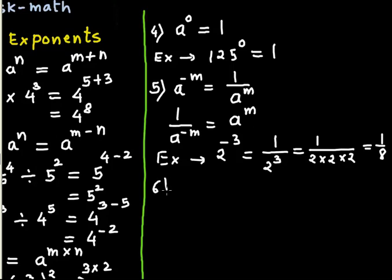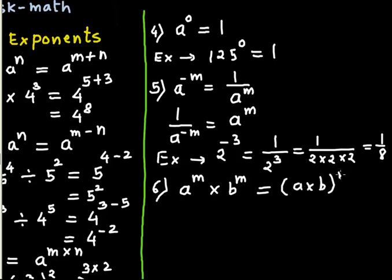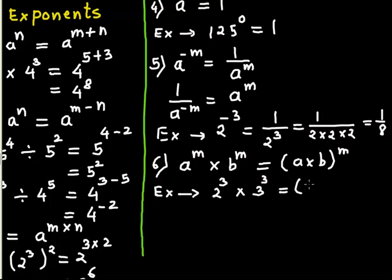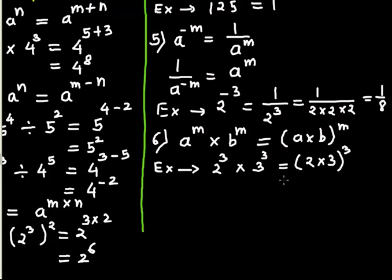The 6th law is: if the bases are different, exponents are same, and there is a multiplication sign in between them, then you bring the two bases into one parenthesis with a common exponent. For example, 2 cubed times 3 cubed — you bring the two bases into one parenthesis keeping the common exponent, so the answer is 6 cubed.